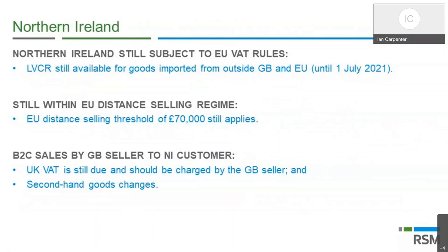What about Northern Ireland? Northern Ireland effectively has a foot in both camps — in the EU and in the UK. A GB seller selling goods to a business or individual in Northern Ireland will charge UK VAT. However, Northern Ireland is also subject to EU VAT rules, which brings anomalies: low value consignment relief, which isn't available in the rest of the UK, is currently available in Northern Ireland, and Northern Ireland is still within the EU distance selling regime.